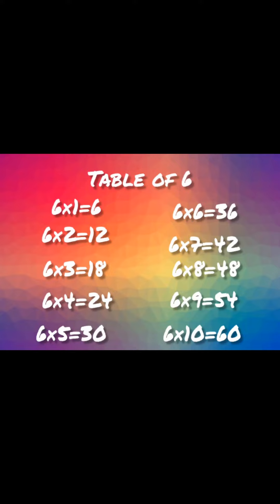Six sixes are thirty-six. Six sevens are forty-two. Six eights are forty-eight. Six nines are fifty-four. Six tens are sixty.